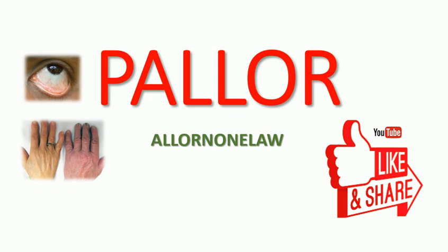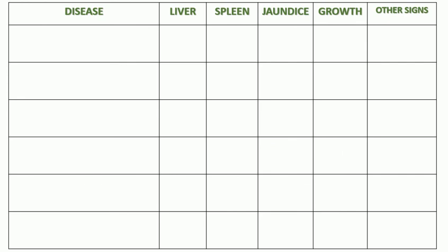Let's move on to the slide I have made. I made a six-column table where there is a disease, the liver, the spleen, jaundice, and the growth of the child — this is especially focused on children — and other signs. It's going to be very interesting. I will give you a scenario and you can diagnose the disease.